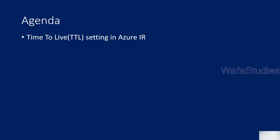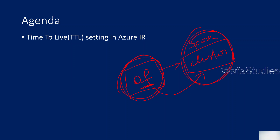Whenever you create any data flow in Azure Data Factory, ADF will spin up one cluster behind the scenes. You don't have any control - ADF will automatically spin up this cluster and the entire data flow will be executed on this Spark cluster. Whenever you execute any data flow, sometimes you observe that it will take a little time to execute, because it has to spin up the cluster first and then execute your data flow.